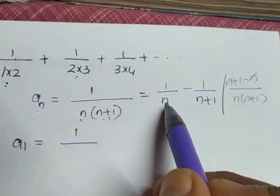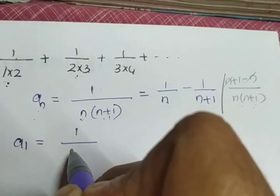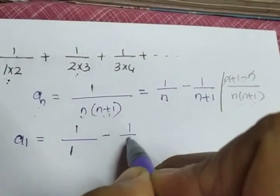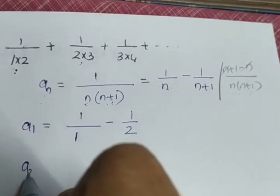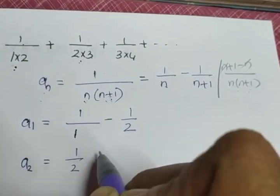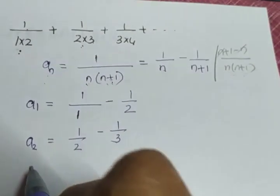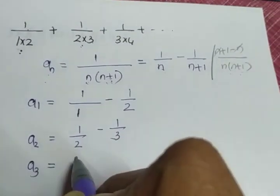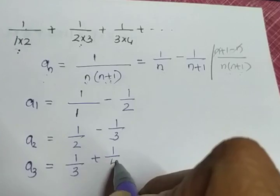If I substitute the value of n here as 1, we are getting 1 by 1 minus 1 by 2. If I substitute the value of n as 2, what I get is 1 by 2 minus 1 by 3. If I substitute the value of n as 3, what I get is 1 by 3 plus 1 by 4.